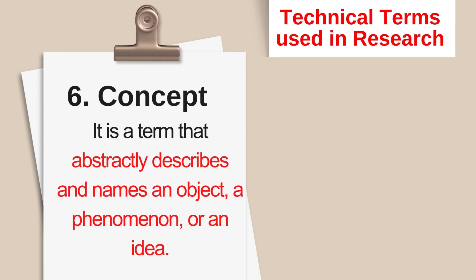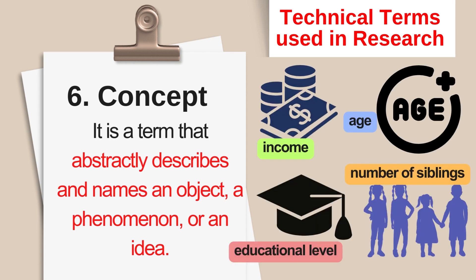Number 6 is concept. It is a term that abstractly describes and names an object, a phenomenon, or an idea. Examples include common demographic measures like income, age, educational level, and number of siblings.